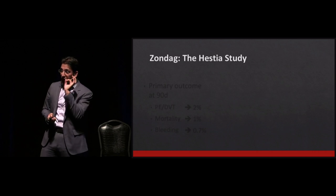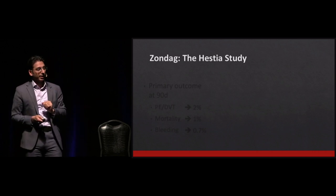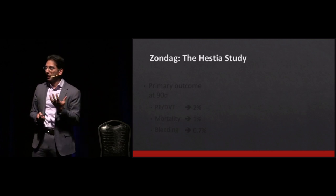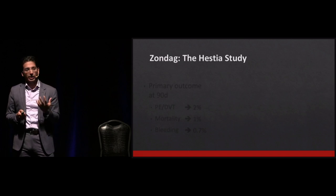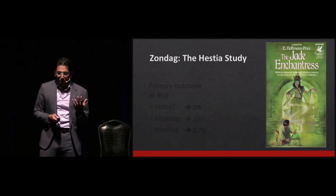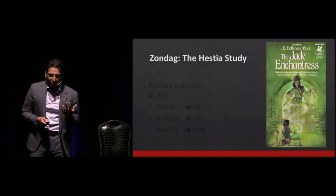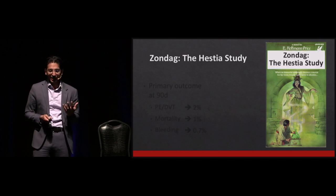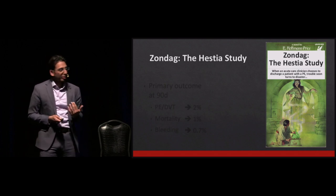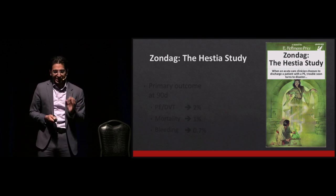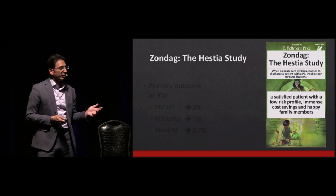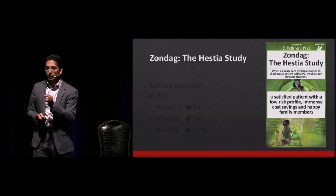The big study you really need to know is called the Zondag-Hestia study. Zondag is the primary author, a Dutch researcher. This was a cohort study done in the Netherlands. The primary outcome at 90 days was PE/DVT recurrence, mortality, and bleeding — exactly what you're afraid of. When they looked at the group of patients they sent home, the rates were: 2% recurrent PE/DVT, 1% mortality, and 0.7% bleeding. They used Coumadin and low molecular weight heparin, and they used the Hestia criteria to select low-risk patients.